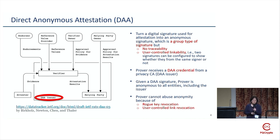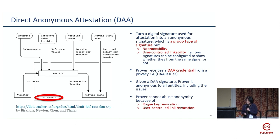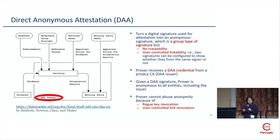We actually chose an anonymous signature called Direct Anonymous Attestation — DAA. This is a group-type signature. You're probably all familiar with group signatures: proof of membership with traceability. The verifier cannot know who you are, but a trusted third-party tracer or group manager can find you. But that traceability is not good because we cannot find a purely trusted third party to handle your privacy.